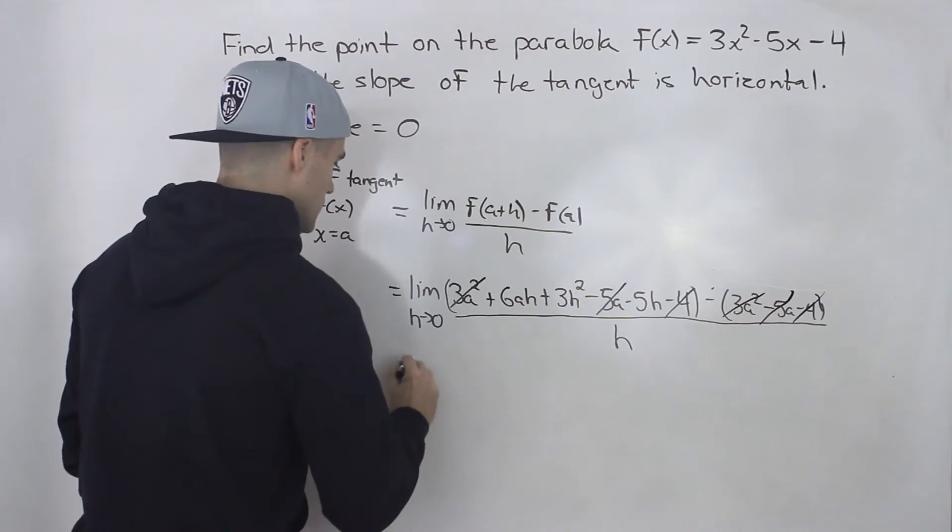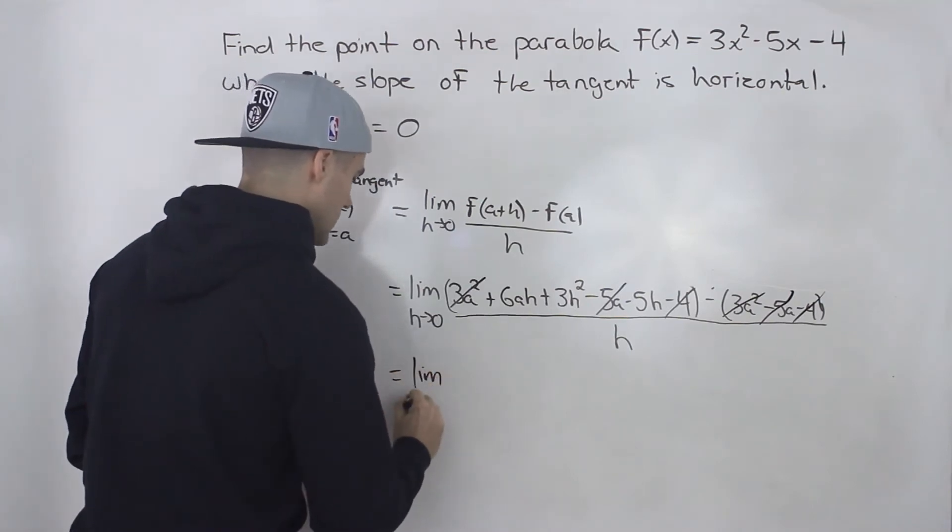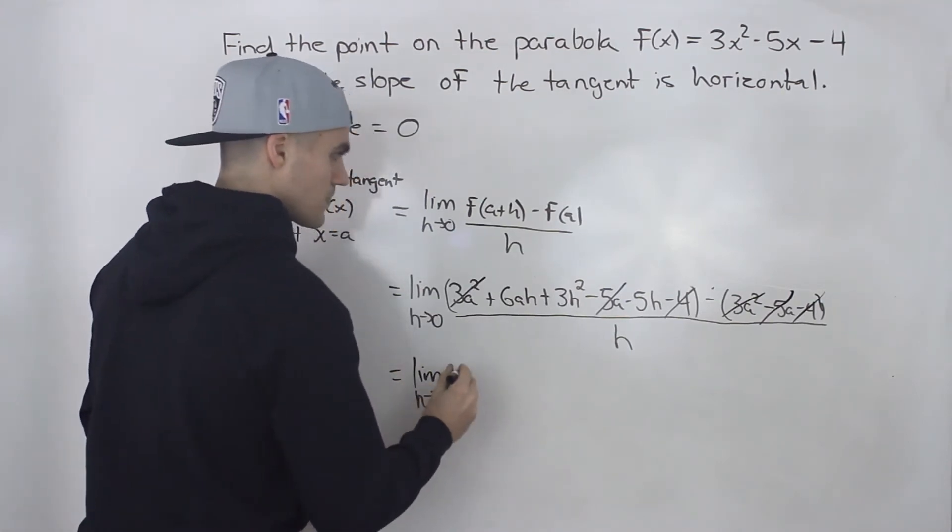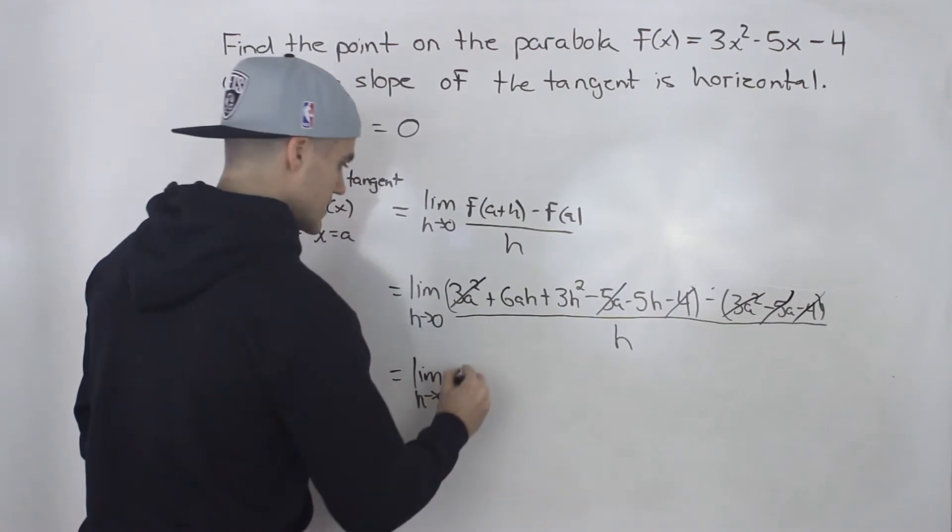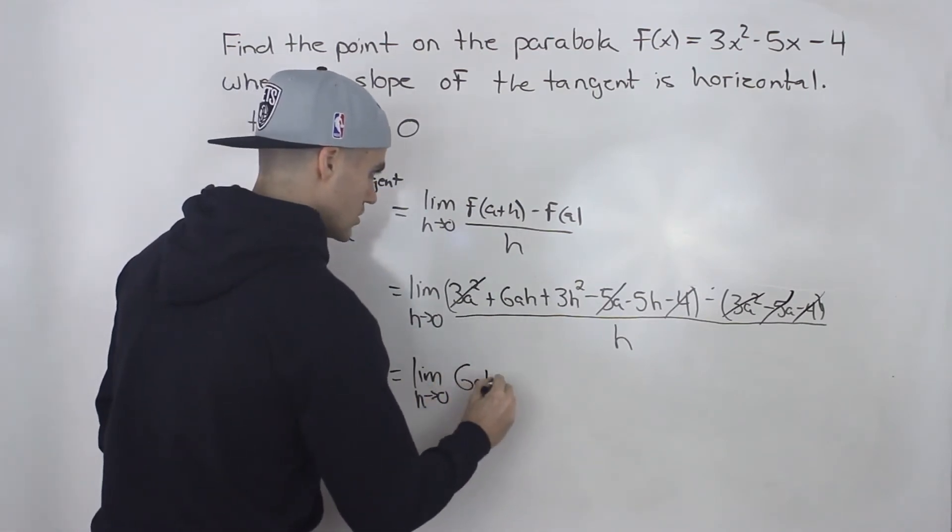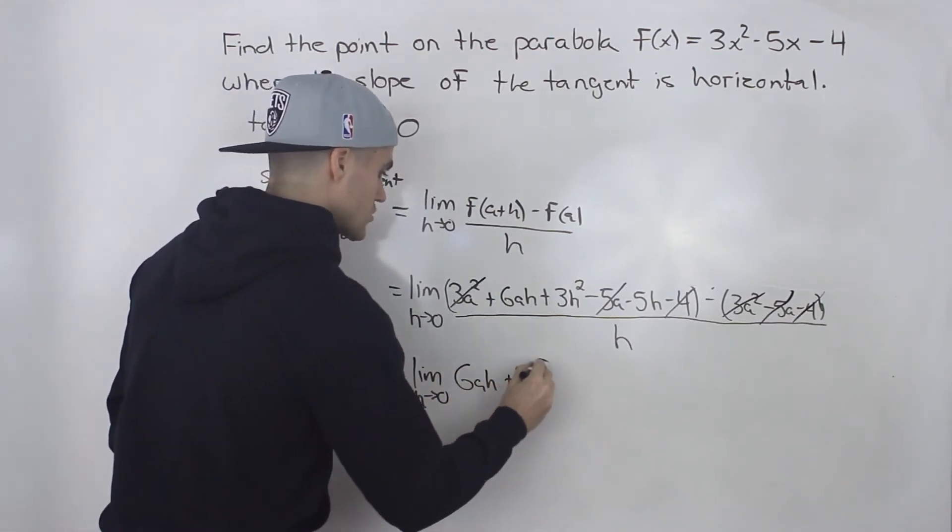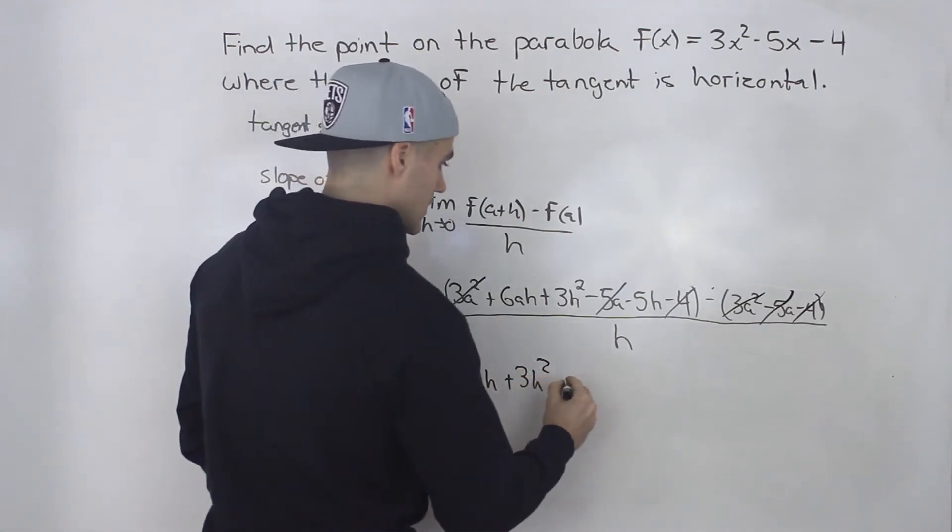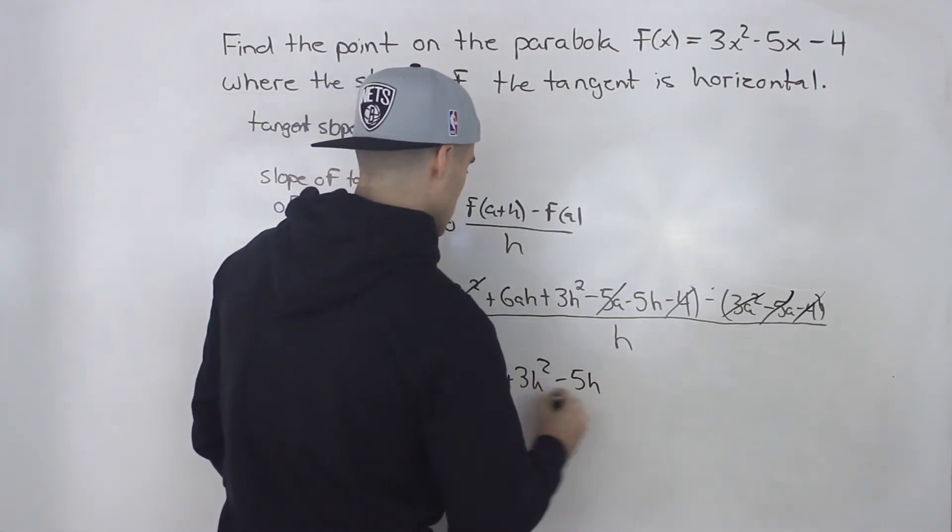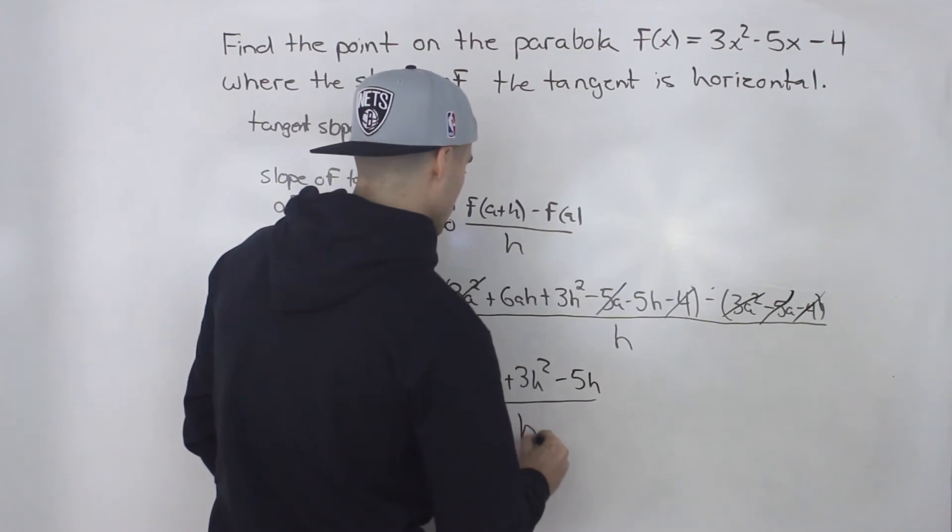So you would just end up with the limit as h goes to 0 of 6ah + 3h² - 5h all over h.